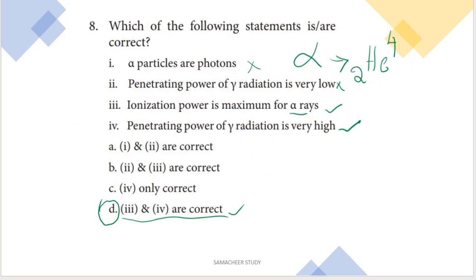Next: which of the following statements is correct? Read each statement and mark the correct ones. First: alpha particles are photons — this is wrong, alpha particles are represented as 2He4, not photons. Second: penetrating power of gamma radiation is very low — this is also wrong, it is actually very high. Third: ionization power is maximum for alpha rays — this is correct. Fourth: penetrating power of gamma radiation is very high — this is also correct. So statements three and four are correct; option D is the right answer.